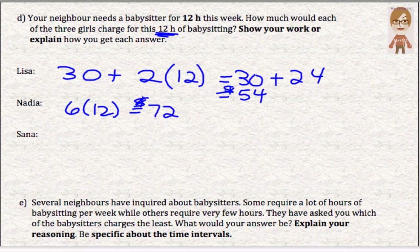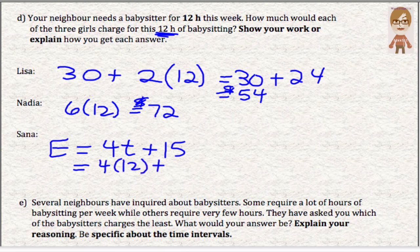And then Santa, we just said Santa's earnings. We wrote an equation here. It looked like 4T plus 15. So she charges $4 an hour for 12 hours, and then a flat fee of $15 that we add on. So 4 times 12 is 48, plus 15 is $63.